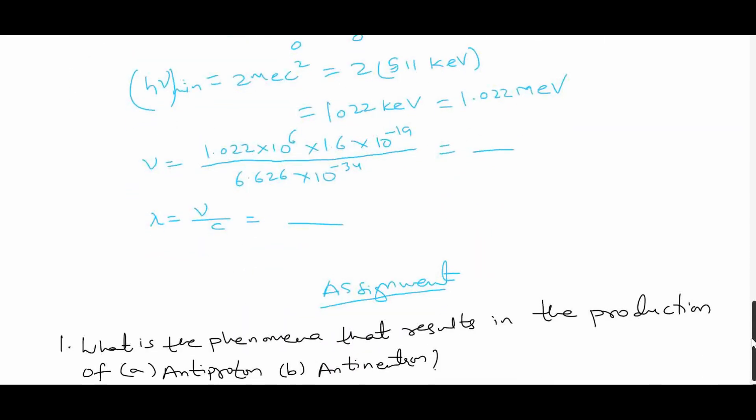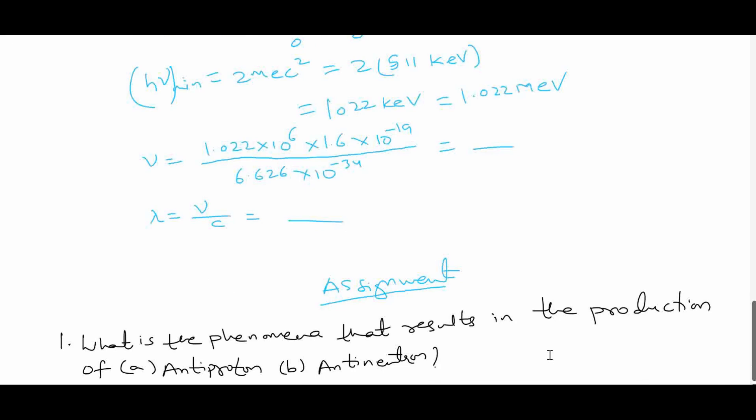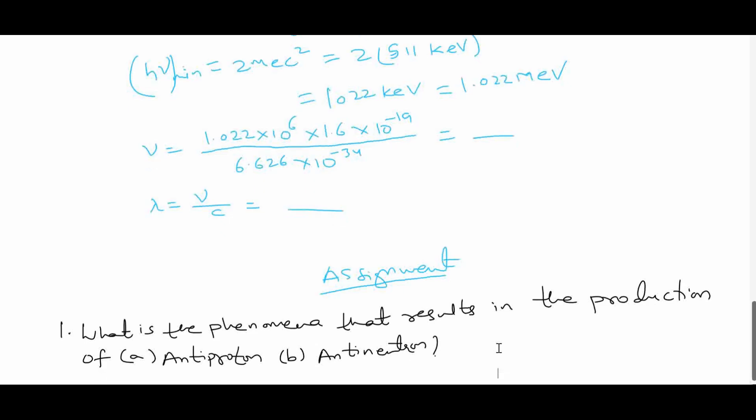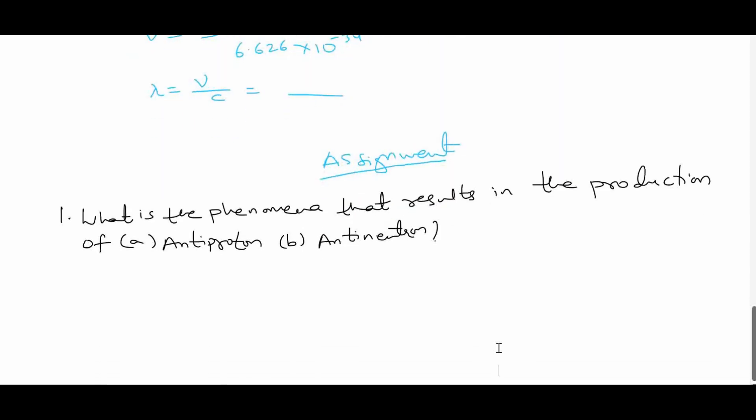You can also take up this question. It is an assignment for you. What is the phenomena that results in the production of anti-proton and anti-neutron? Please write in the comments and let me know. Thank you.